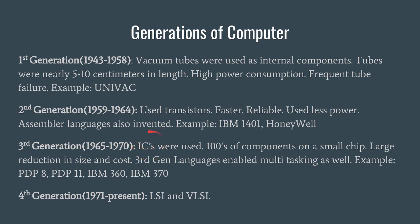Moreover, this has also led to a huge reduction in cost. Earlier, in the era of first generation or second generation computers, nobody could even dream of purchasing a personal computer because that was not at all feasible. But today, more or less every home has at least one computer or at least one mobile phone. That is how computers have advanced, starting from the Abacus to today's laptops, mobiles, and computers. The fifth generation is supposedly going to be artificially intelligent computers, which will be smart enough to learn everything from the environment on their own.